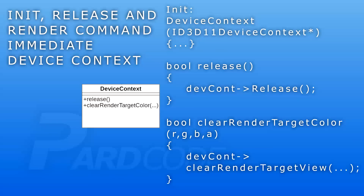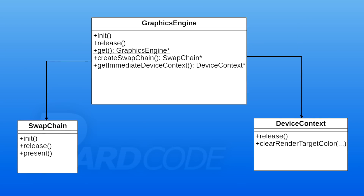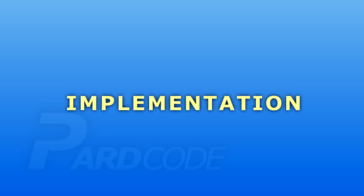Let's start to create the class diagram. We can add a DeviceContext class that for now represents only the immediate context, where we put release and the clear render target color method. The init method is not needed since initialization of the context is already done when we initialize the graphics engine, so we simply pass the context pointer in the constructor. Since the immediate context is created at engine initialization, we add a method to retrieve it called 'get immediate device context'.